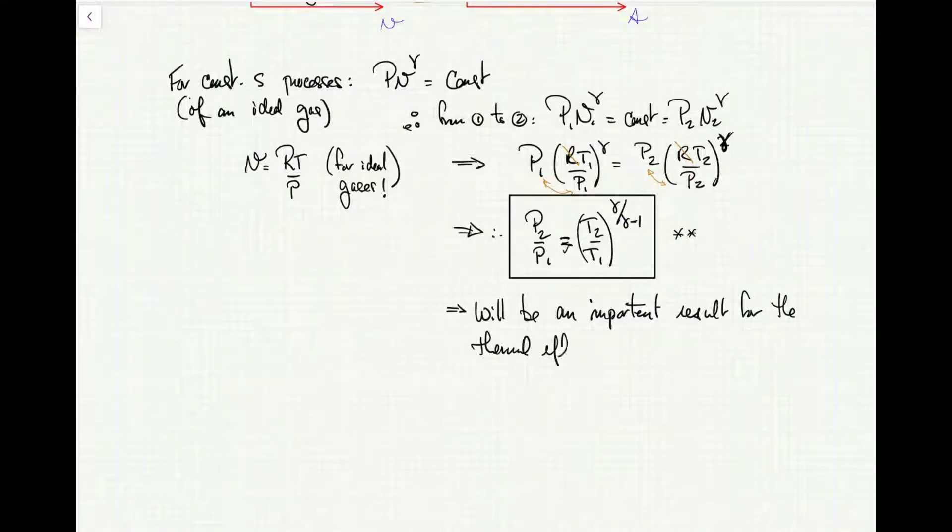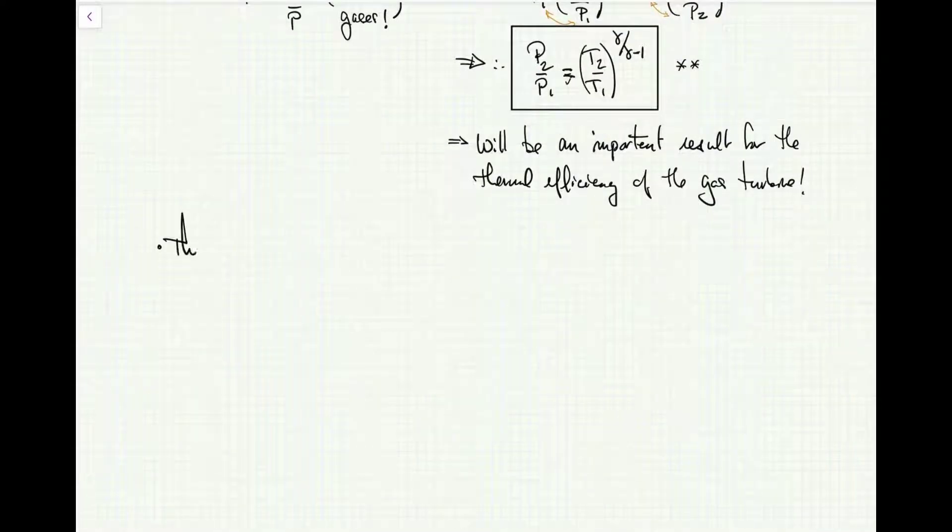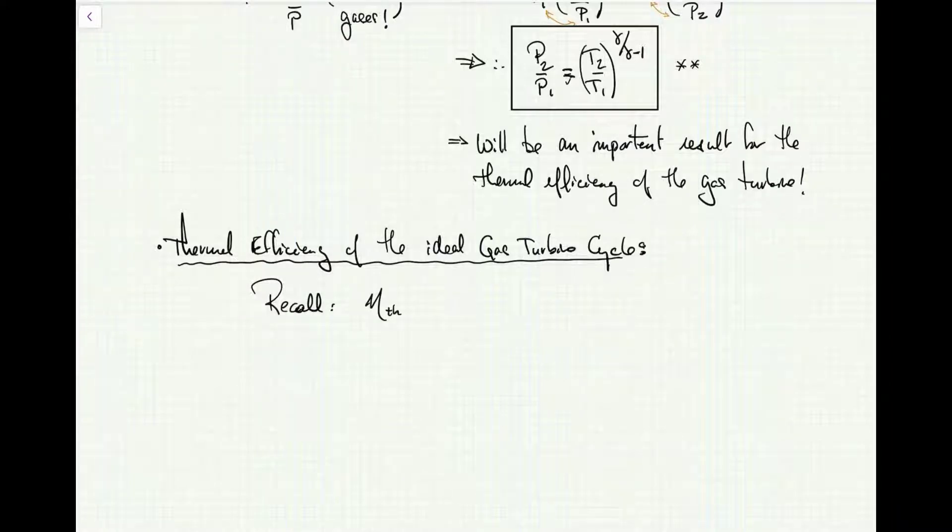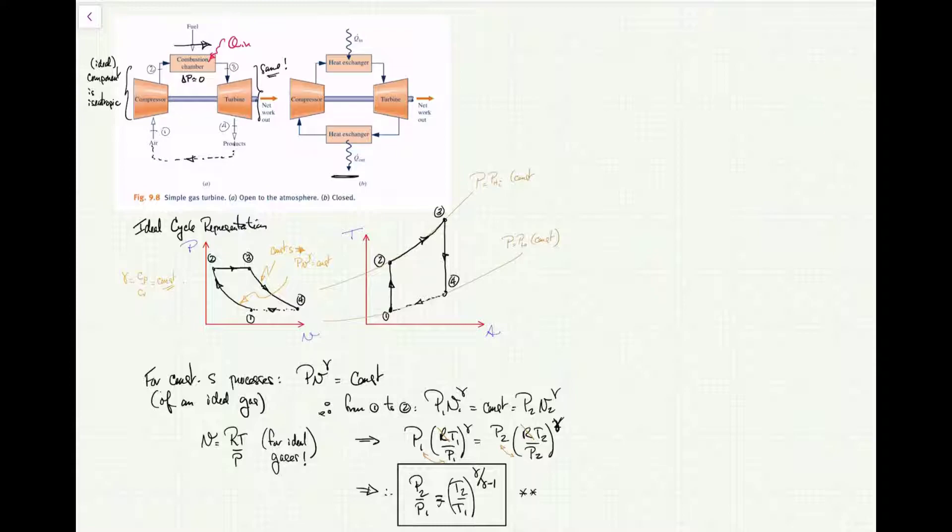The thermal efficiency is the main performance parameter of the Brayton cycle. We start from the basic definition, which is the net work out divided by the total heat in. On a rate basis, because we can apply L'Hôpital's rule, this gives us rates. Here I'm highlighting the difference between work net, which is the work output of the turbine minus the work input of the compressor.